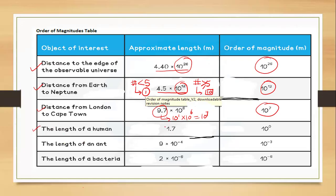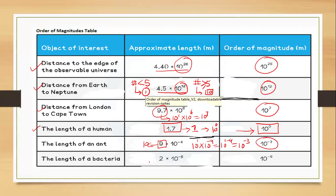The length of a human is 1.7 meters. Since 1.7 rounds to 1, and 1 = 10⁰, the order of magnitude is 10⁰. The length of an ant is 9 × 10⁻⁴ meters; since 9 rounds to 10, this becomes 10¹ × 10⁻⁴ = 10⁻³. The length of a bacterium is 2 × 10⁻⁶ meters; since 2 is less than 5, the order of magnitude is simply 10⁻⁶. This chart shows how to round numbers to the nearest power of 10.